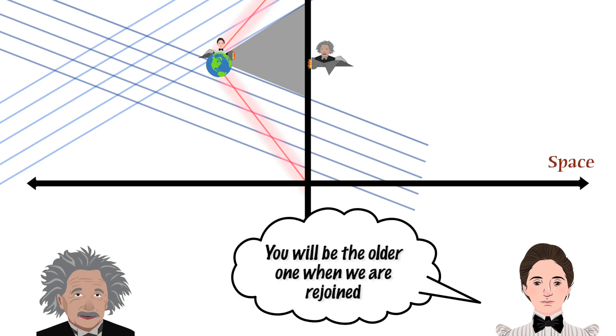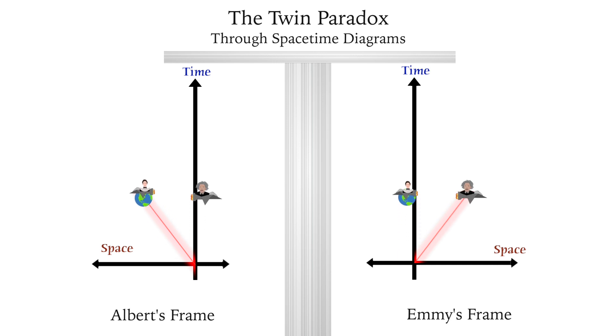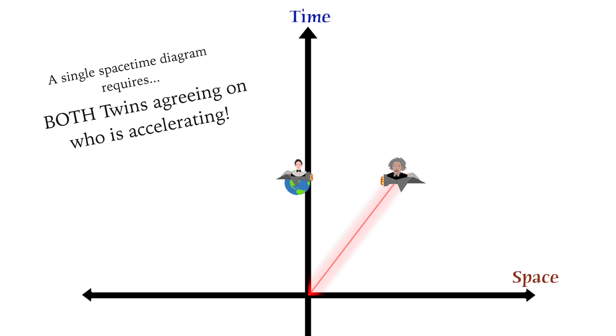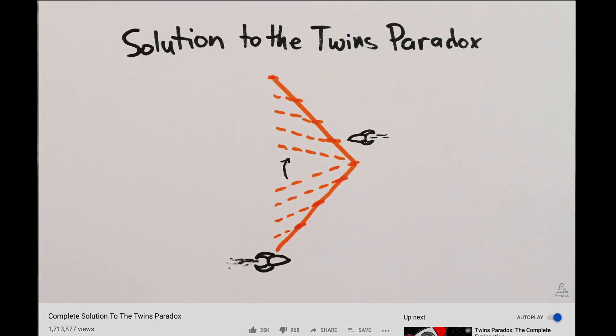Thus, since the Earth twin now fails to account for a stretch of passing time, they will discover that it is the space twin who is going to be the older one when the pair is rejoined. If you want to use the spacetime diagram for describing the twin paradox, you have to draw two spacetime diagrams, one for each twin's perspective. And as soon as you realize that both twins have the right to draw different spacetime diagrams, you arrive right back at the paradox. To be able to draw one and only one diagram requires both twins agreeing on who the accelerating twin is.